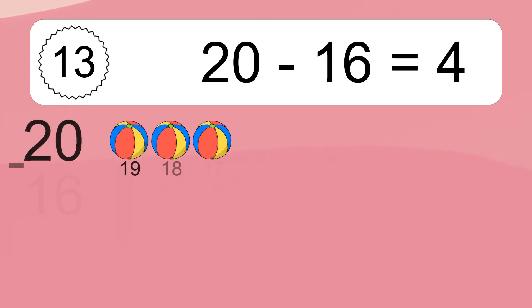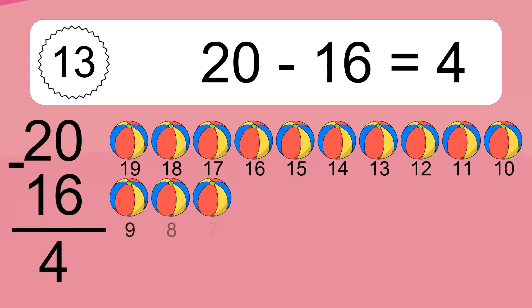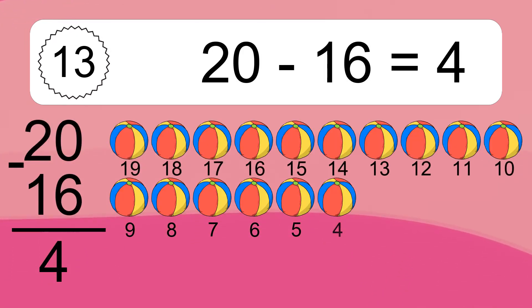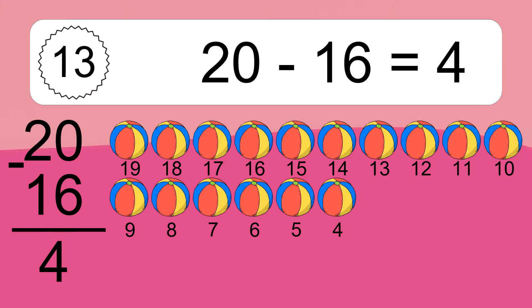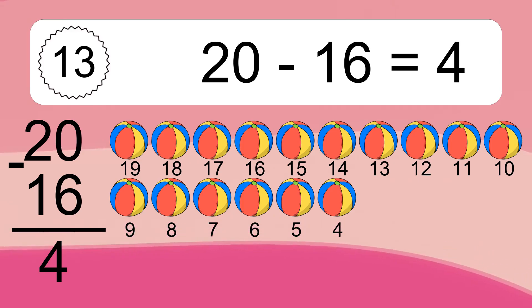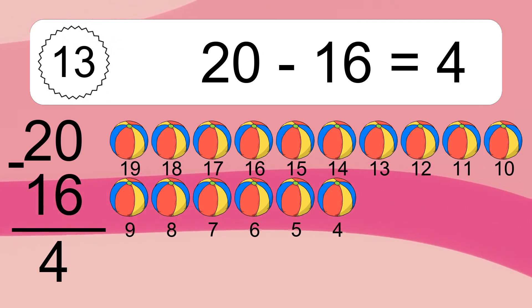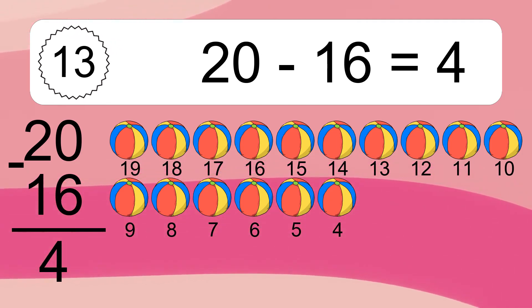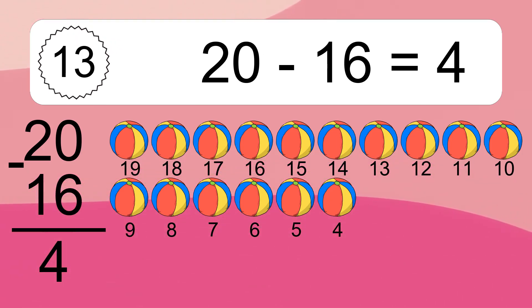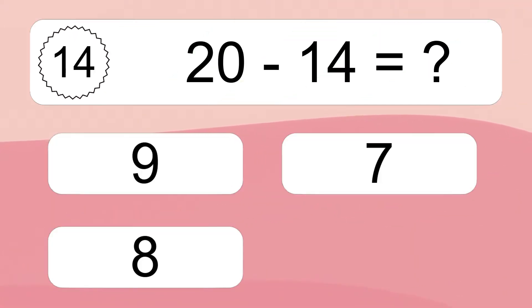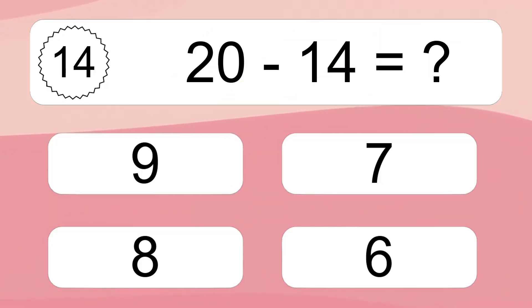20 minus 16 equals what? 20 minus 16 equals 4. Let's count it: 19, 18, 17, 16, 15, 14, 13, 12, 11, 10, 9, 8, 7, 6, 5, 4.